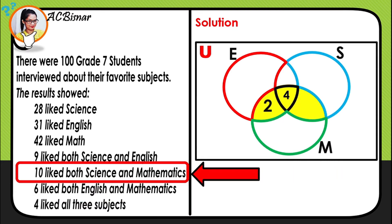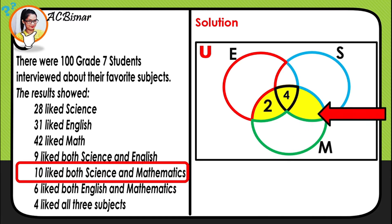Next, we look for students who like both science and mathematics. We locate the intersection of science and math. Since we already have 4 in the center, and 10 like both science and mathematics, we compute 10 minus 4, which gives us 6.